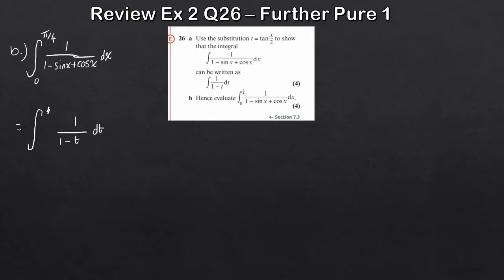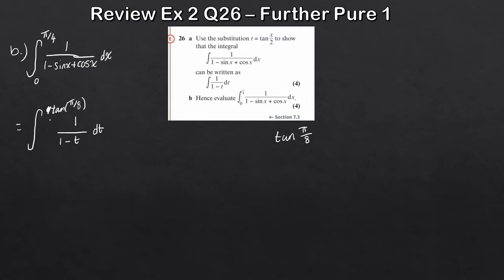But our limits will change because we've used a substitution - remember when integrating by substitution you have to update the limits. For the upper limit, x = π/4, so t = tan(π/8). For the lower limit, t = tan(0/2) = tan(0) = 0. So the new upper limit is tan(π/8) and the lower limit is 0.